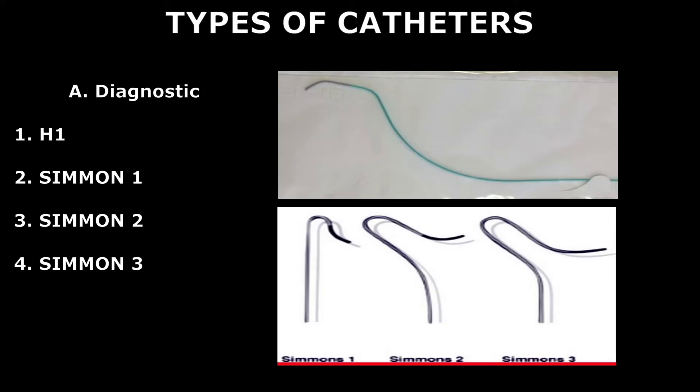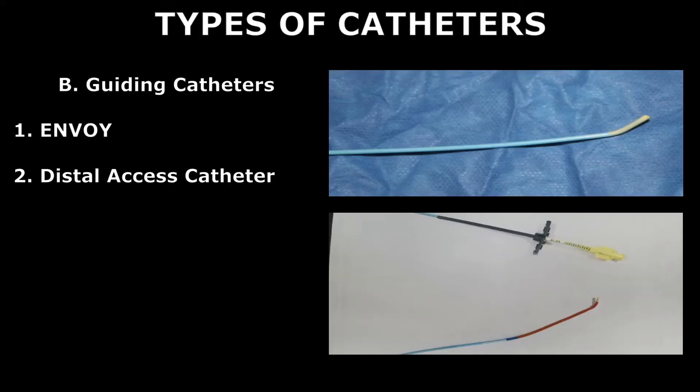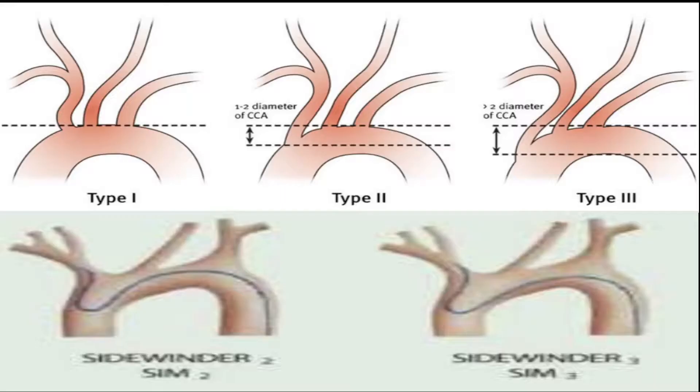Sim 2 and Sim 3 catheters are used when usual catheters are unsuccessful in catheterization, as in type B and especially type C aortic arch. These are guiding catheters — we usually use Envoy and Distal Access catheter when we anticipate that some therapeutic intervention can be done in the same sitting. In tortuous courses of vessels, the Distal Access catheter is preferred.